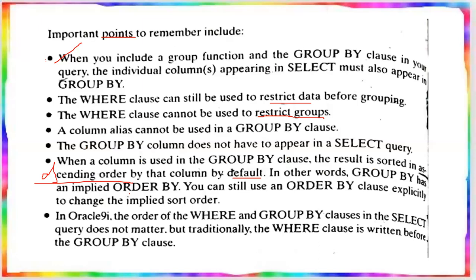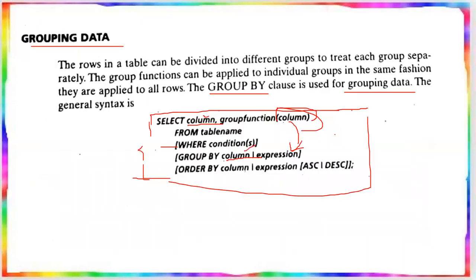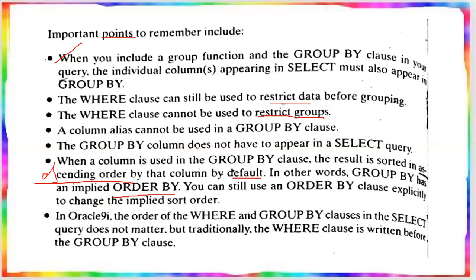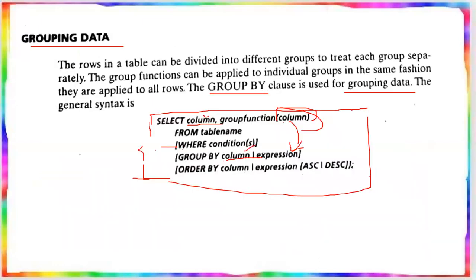We can apply the ORDER BY clause explicitly to change the sorting order. The default sorting is ascending. If you want to change it to descending order, we can apply the ORDER BY clause. Traditionally, the WHERE clause is written before the GROUP BY clause in the query.